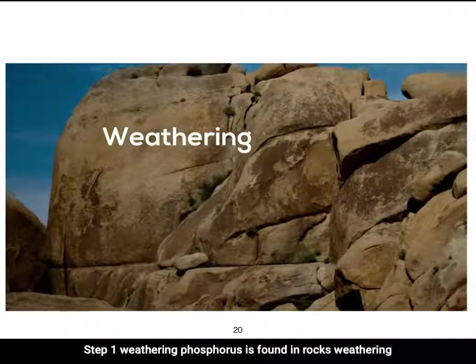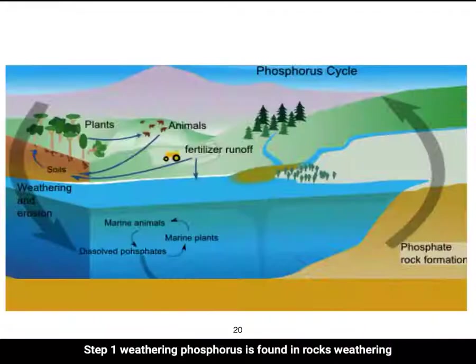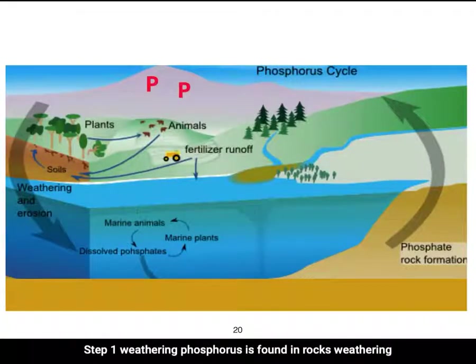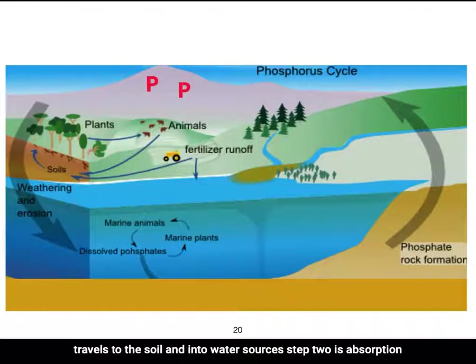Step 1 — Weathering: Phosphorus is found in rocks. Weathering, along with rain, breaks down the phosphorus in rocks, and it travels to the soil and into water sources.